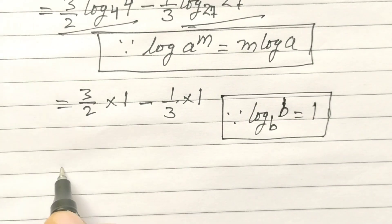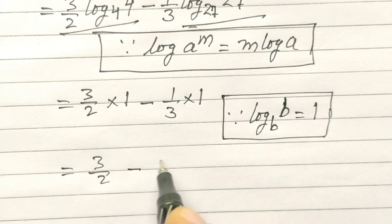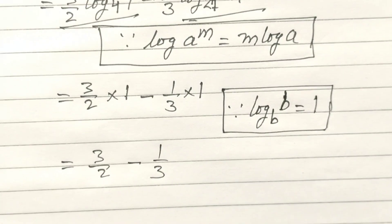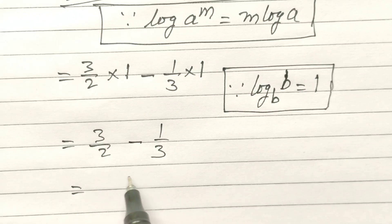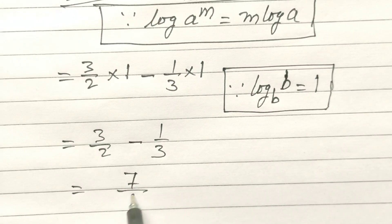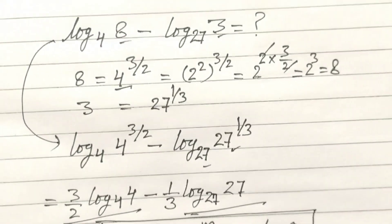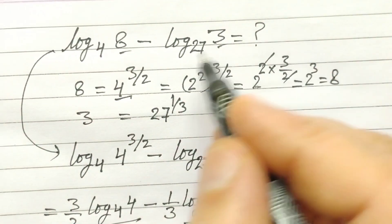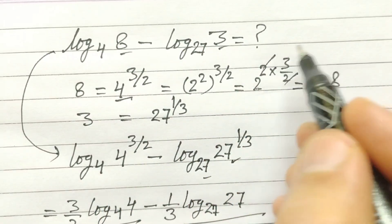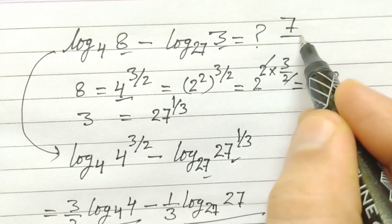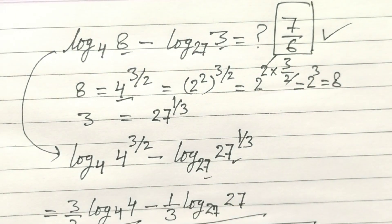So 3/2 minus 1/3, this value will be 7/6. So the answer is 7/6. OK friends, thank you.